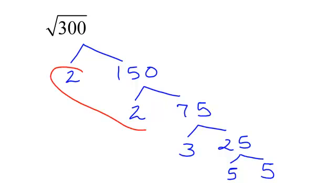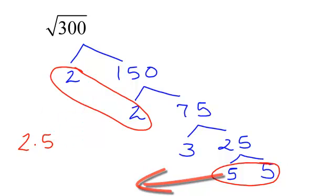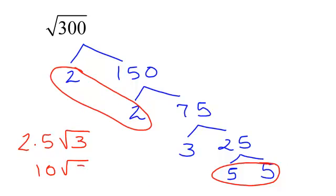Then once again, I circle my pairs of numbers. I have a pair of 2s. I have a pair of 5s, so that's what's going to come out, the 2 and the 5. That will come out from underneath the radical. I will still have a 3 left in there, and 2 times 5 is 10, radical 3.